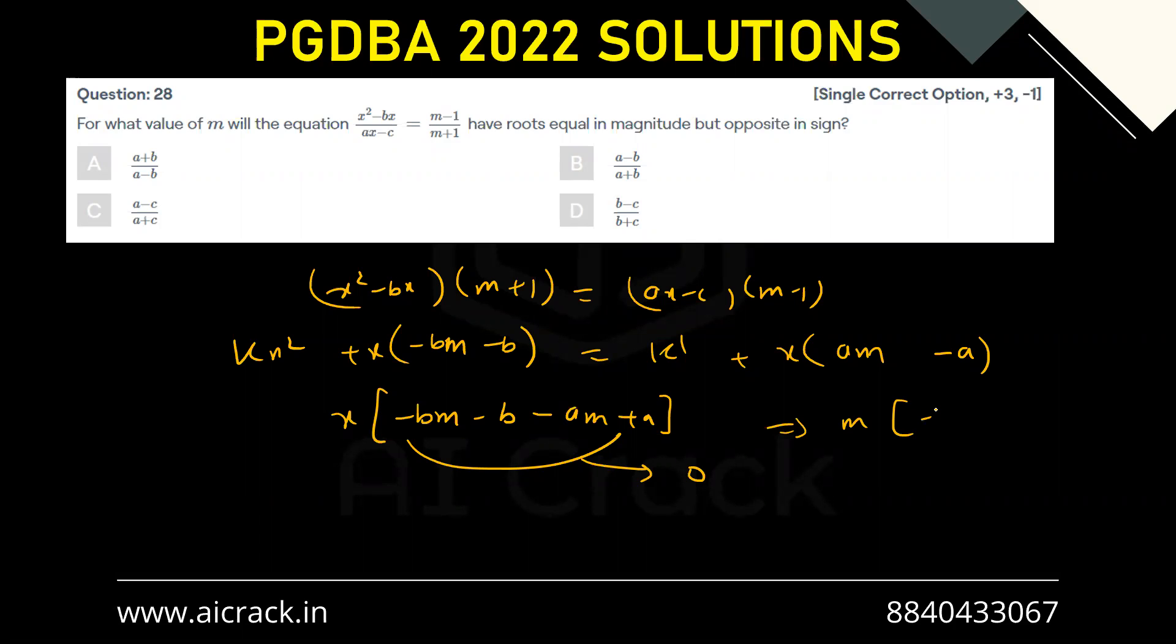So basically m times (-b - a) equals to b - a. So that would give me m = (a-b)/(a+b). So b is the correct answer.